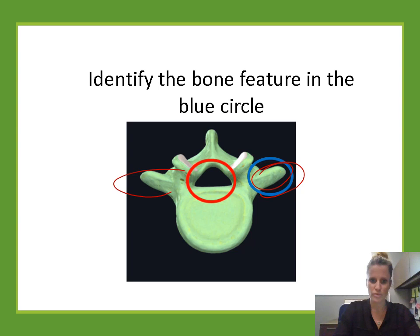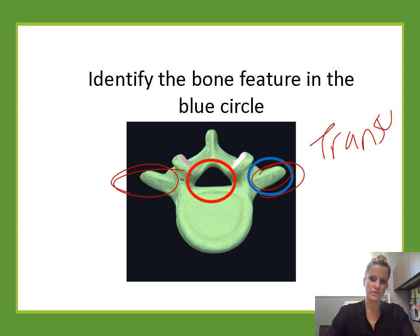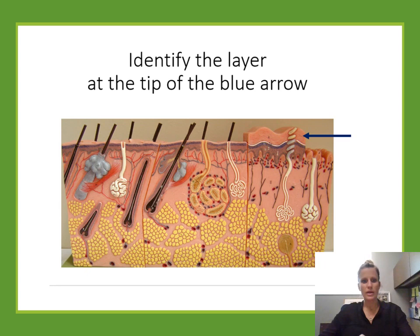Identify the bone feature in the blue circle. This is pointing to the processes that go towards the sides of the vertebra — those are the transverse processes.